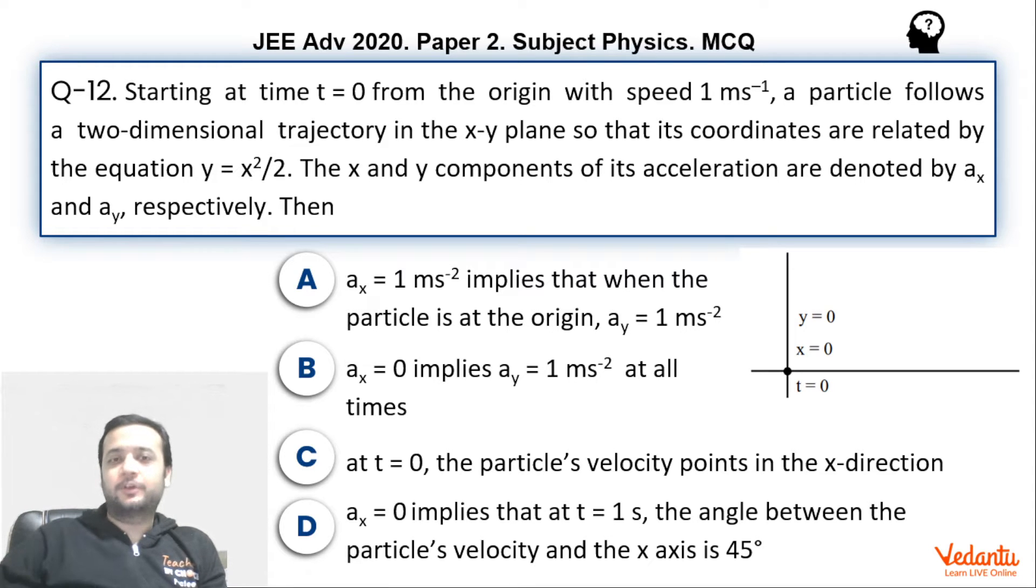So let us see what is happening over here. There is a particle which is moving on a parabolic path in the xy plane. The parabola has been given, that is the equation of trajectory. It starts from t equals 0 from the origin at a speed of 1 meter per second. The accelerations along x and y have been represented by the variables ax and ay respectively.